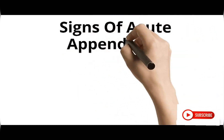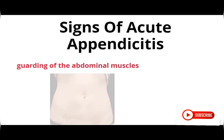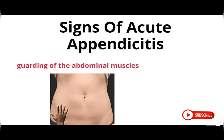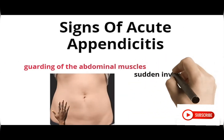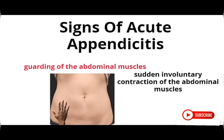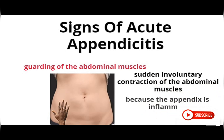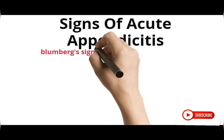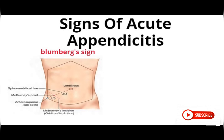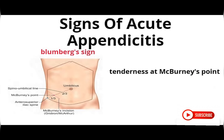There are about 10 signs to test for in acute appendicitis. The first is guarding of the abdomen: when you palpate the right iliac fossa, there is a sudden involuntary contraction of the abdominal muscles, tensing the abdomen to protect the inflamed appendix from the pressure being applied. The next sign is tenderness at McBurney's point — two to three centimeters from the umbilicus toward the anterior superior iliac spine — also known as the Blumberg sign. Tenderness at this point also indicates appendiceal inflammation.